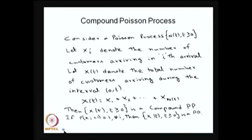We define a random variable X(t) that denotes the total number of customers arriving during the interval 0 to t. That means it is the sum: how many arrivals take place at the first time point x_1, plus how many at the second time point x_2, and so on up to x_{n(t)}, where n(t) is a random variable. Altogether that gives the total number of arrivals.